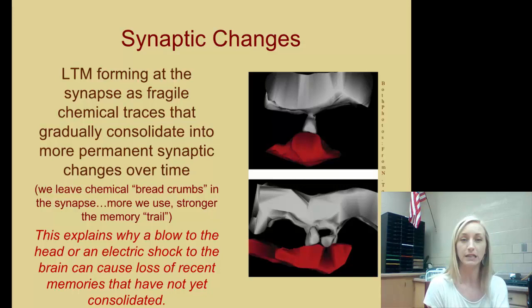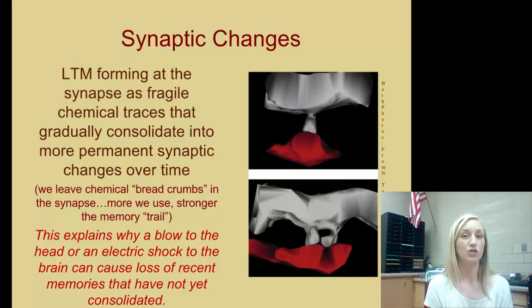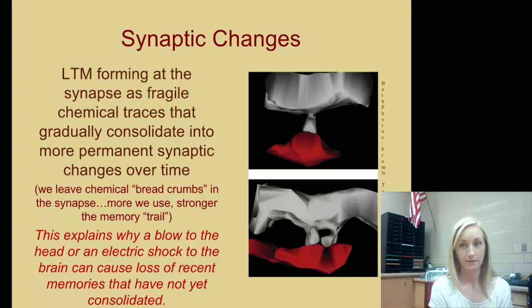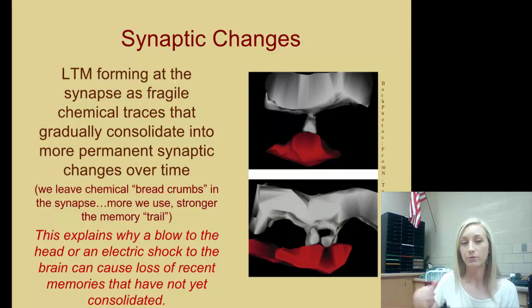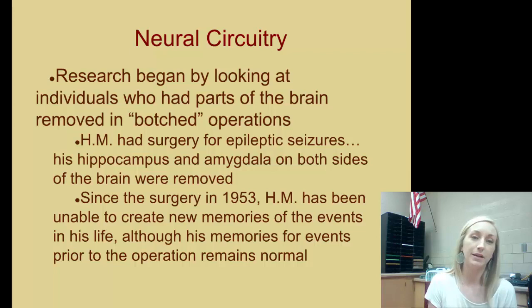Synaptic changes definitely happen. Long-term memory forms at the synapses with fragile chemical traces that gradually consolidate into more permanent synaptic changes over time. Think of it like leaving breadcrumbs in the synapses — the more we use them, the stronger the memory trail. This explains why a blow to the head or an electric shock to the brain can cause loss of recent memories that have not yet consolidated, since our synapses become stronger as we use them.